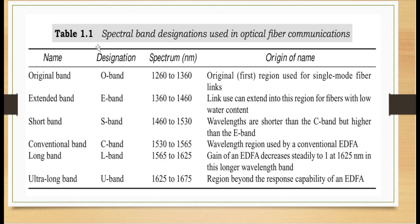So this is table 1.1 shows original band. This is nothing but O-band. Spectrum 1260 to 1360. It is used for single mode fiber links and this is the original first region. Second band is extended band or E-band. Spectrum 1360 nm to 1460 nm. This link can extend into this region for fibers with low water content, means the attenuation is low. Then short band means S-band. It is 1460 to 1530.